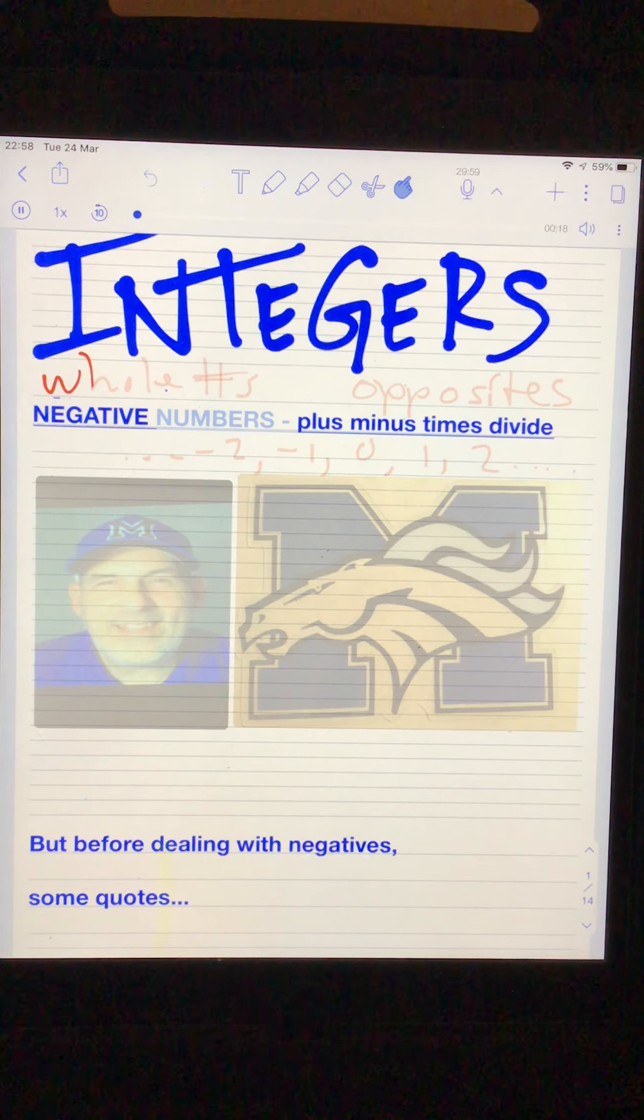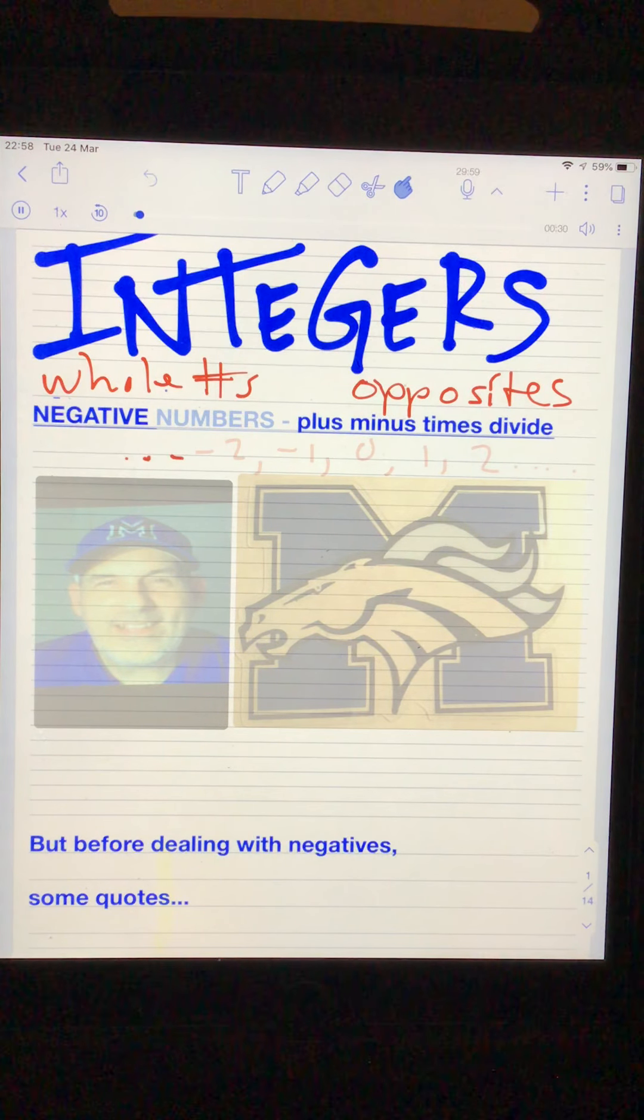Integers are whole numbers and their opposites. Now they also do include zero. So the way I used to always do it is dot, dot, dot, negative two, negative one, zero, one, two, dot, dot, dot. It goes on forever in both directions.